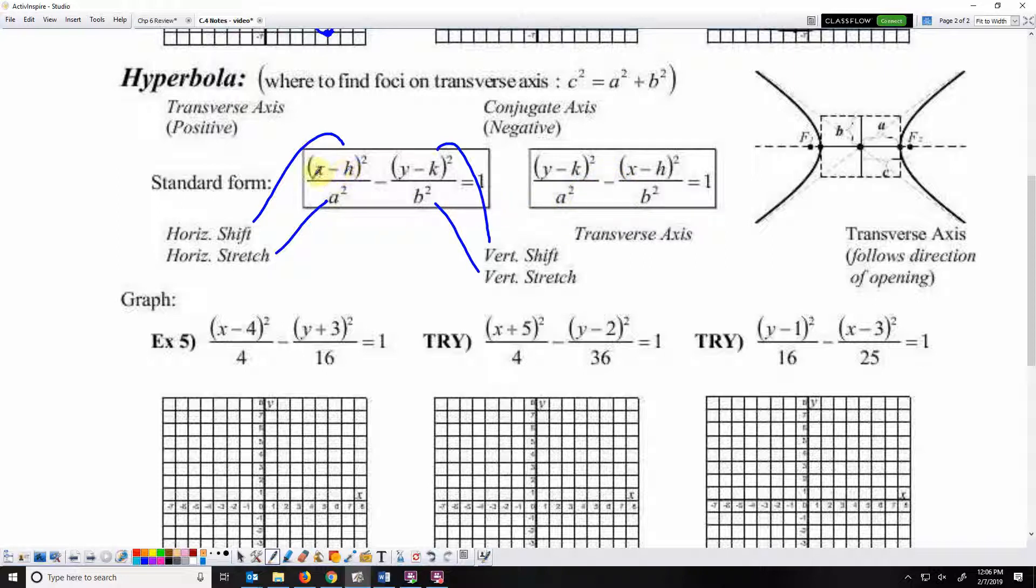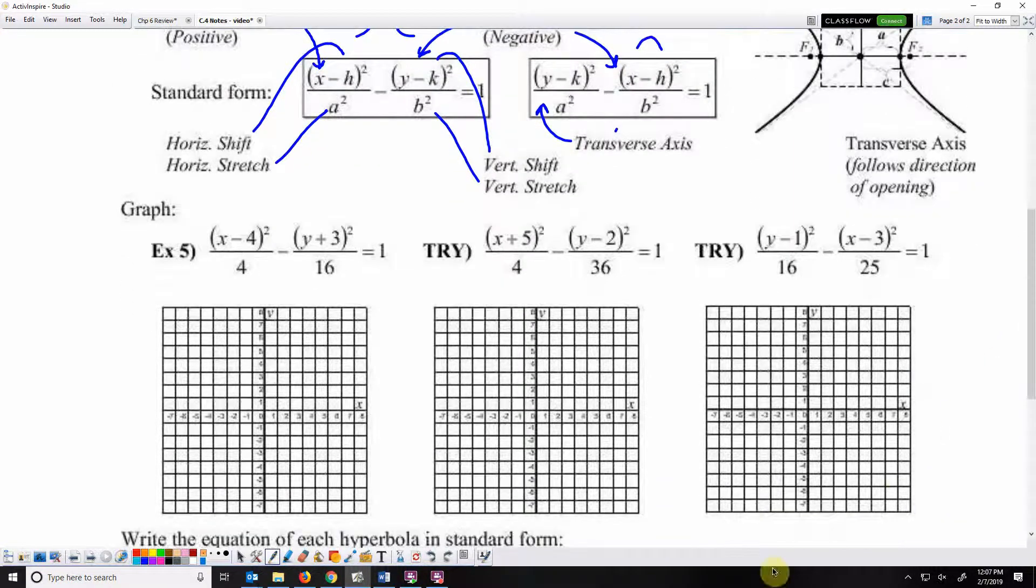When we are horizontal, we're going to have x first. That's going to be an ellipse that opens like that. A vertical ellipse will have y first, opening like that. The transverse axis is the one that's positive; the conjugate axis is the one that's negative. The transverse axis follows the direction of the opening. This opens left to right, so the transverse axis is the x-axis.